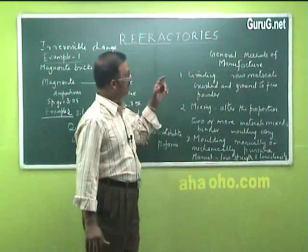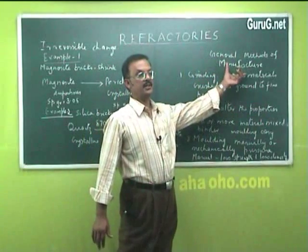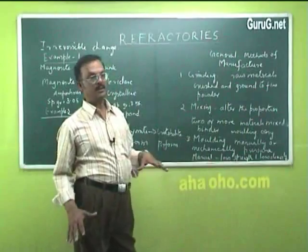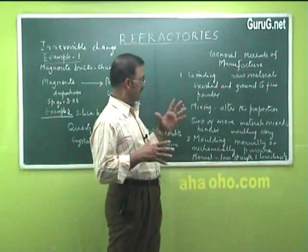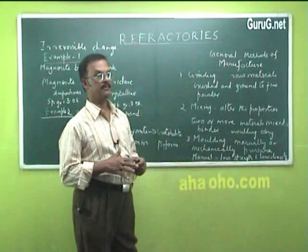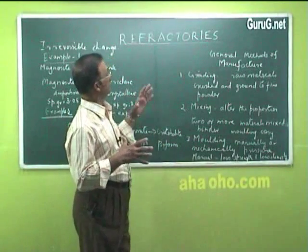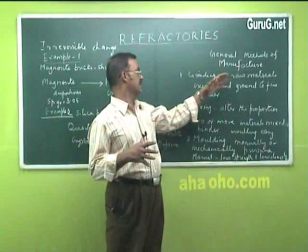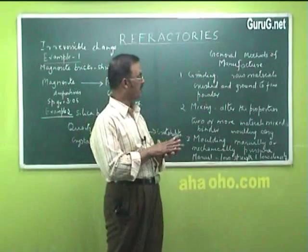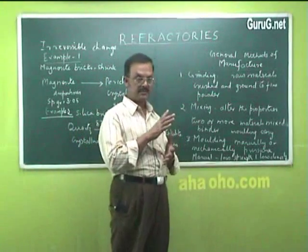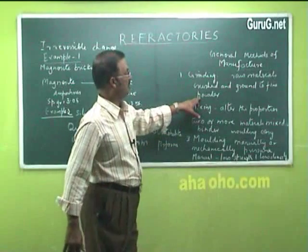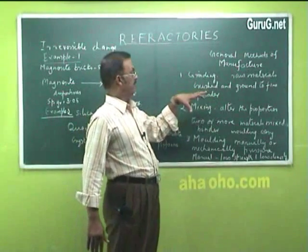Next we will see the general methods of manufacturing refractories. The general methods involve various steps. The first step is grinding. When you want to prepare a refractory, the raw materials are taken, crushed, and ground to a fine powder using pulverizers or some other type of machines, to get a very fine powder.